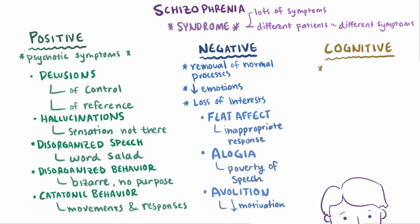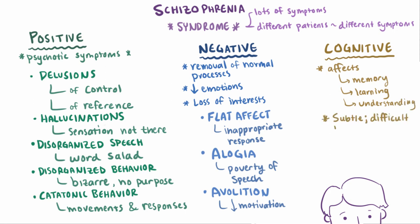Cognitive symptoms include not being able to remember things, learn new things, or understand others easily. These symptoms are more subtle and are more difficult to notice, and might only be detected with specific tests. An example might be somebody not being able to keep track of several things at once, like a phone number and an address.